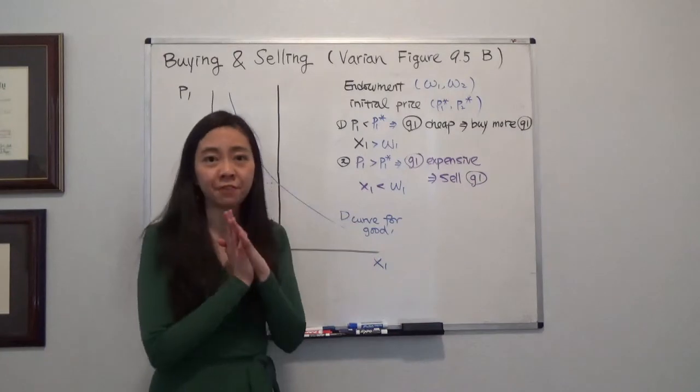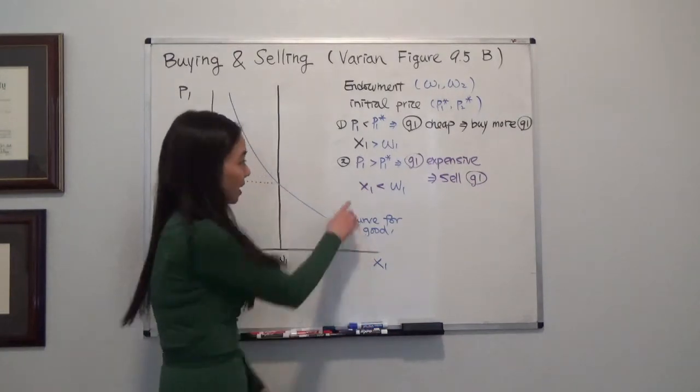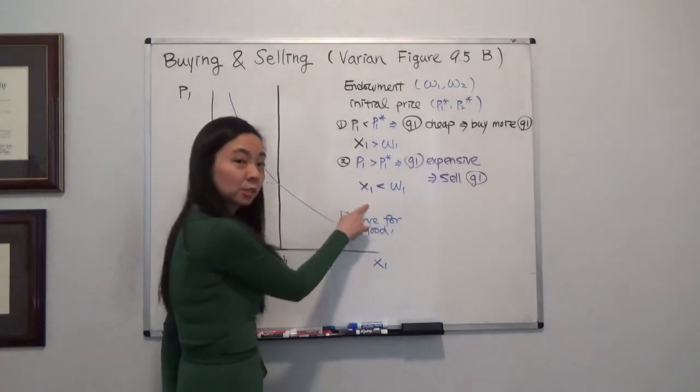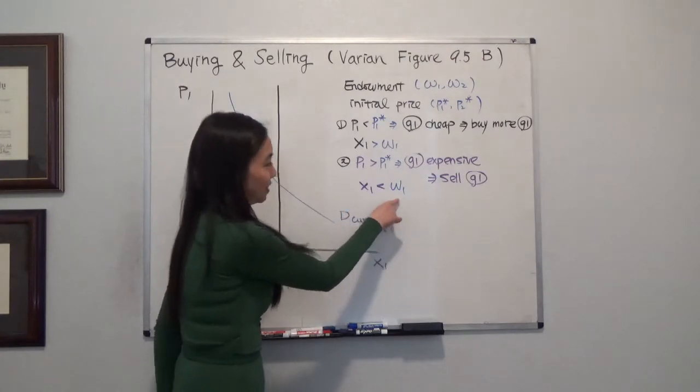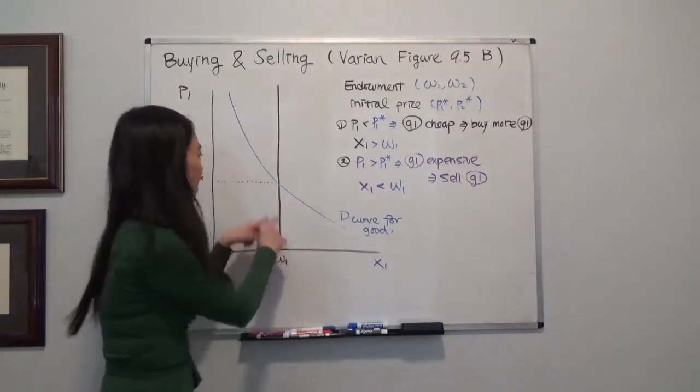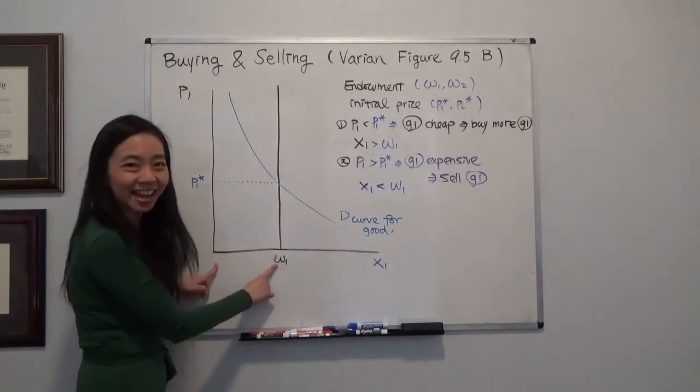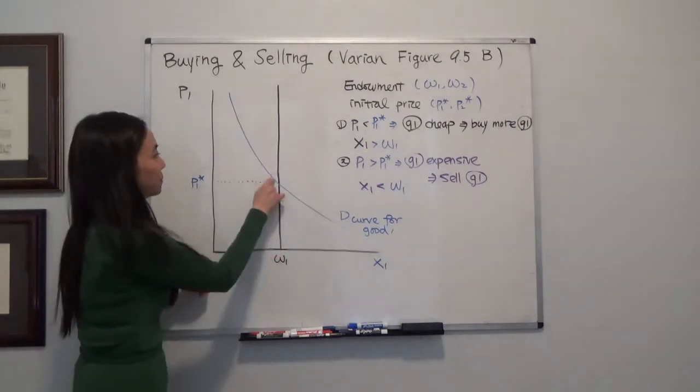So that means my final consumption of good 1, that is the amount of good 1, that's X1, should be lower than my initial endowment. That means I'm going to consume an amount that is less than omega-1, and therefore I'm here.